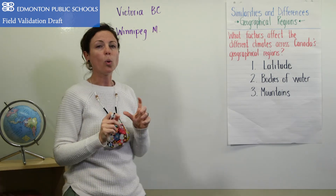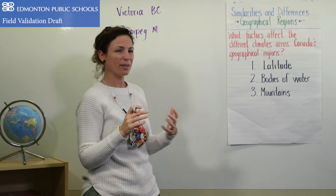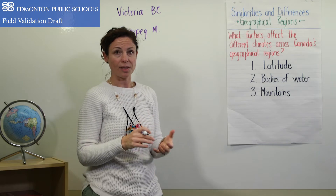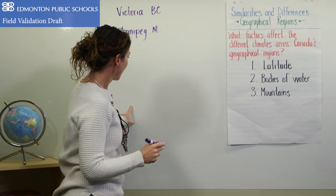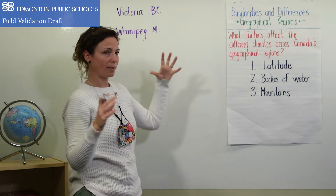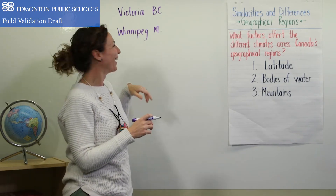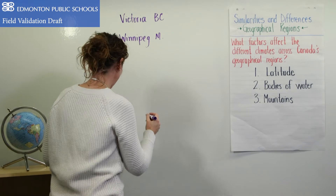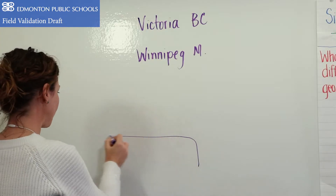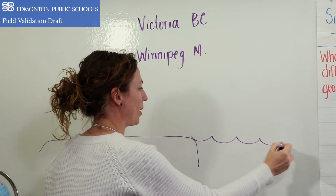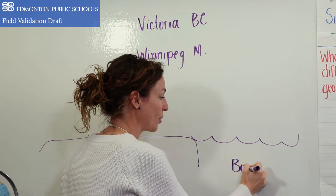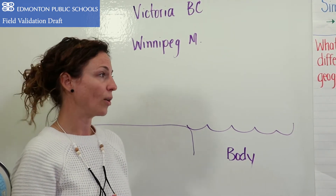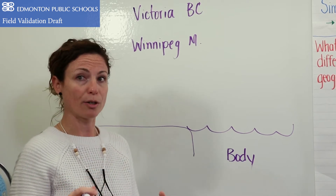These two cities are quite similar in their lines of latitude, so latitude wasn't really determining why they have such a different climate. So I looked a little deeper. Let's draw a quick diagram — this is the land and this is a large body of water. When I say large body of water, I don't mean a river or a lake. I mean something like Hudson's Bay, the Atlantic Ocean, or the Pacific Ocean.